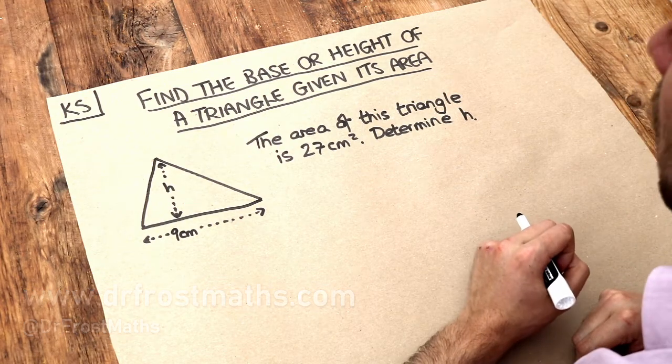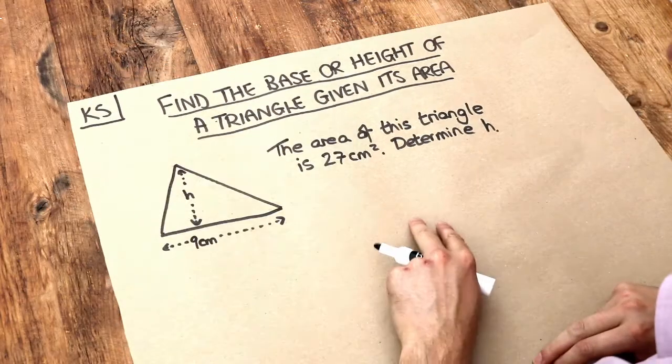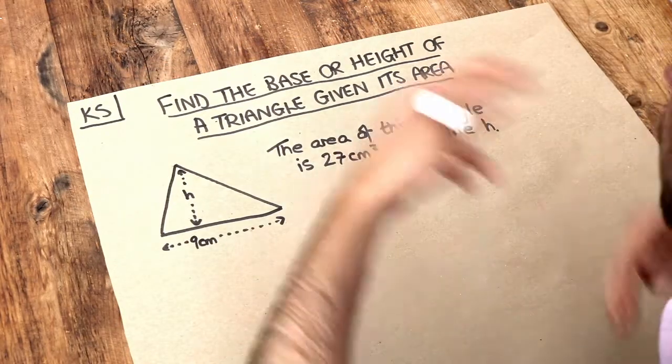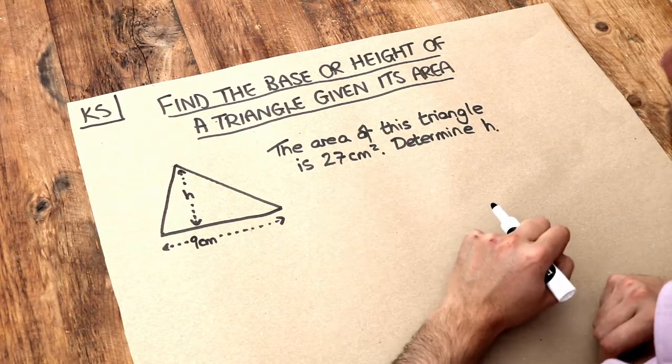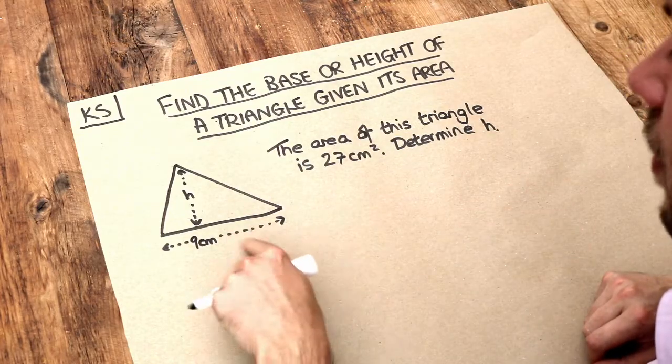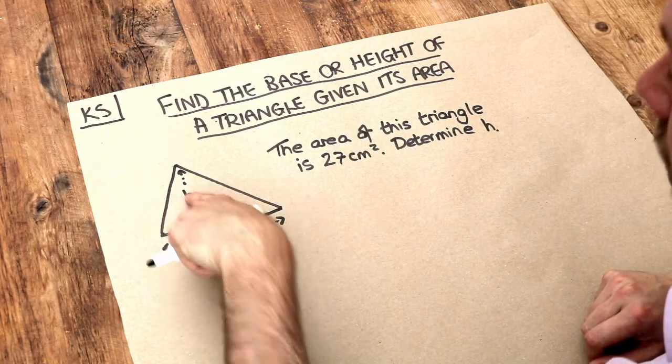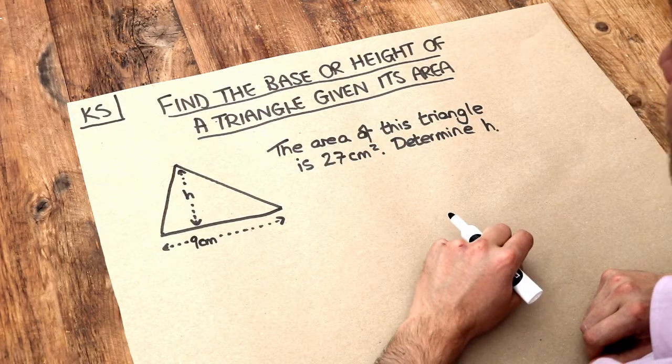In the previous video we looked at how we could use the base and the height of a triangle to work out the area, but now we're working backwards. We've got the area of the triangle and we've got either the base or the height, and we want to find either the height or the base depending on which one we have.